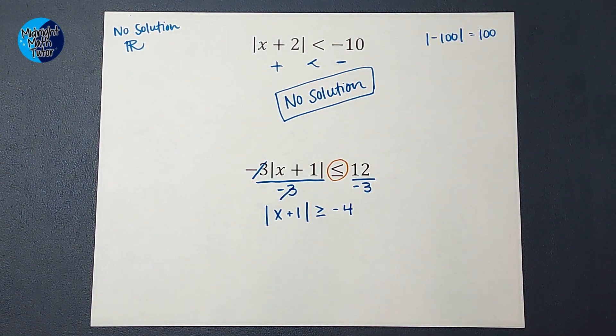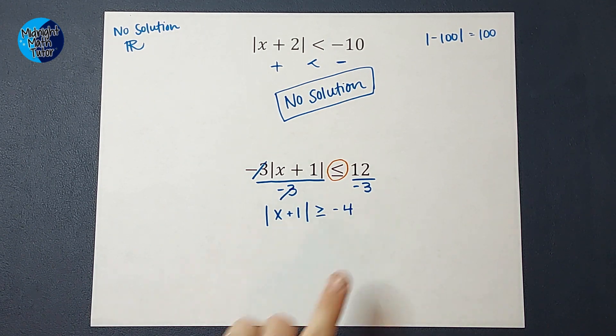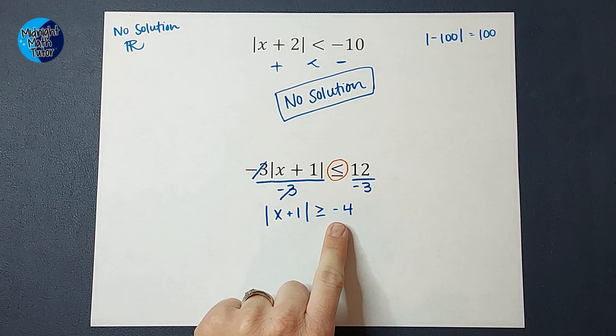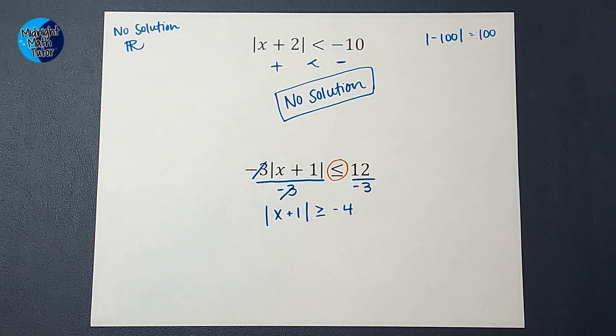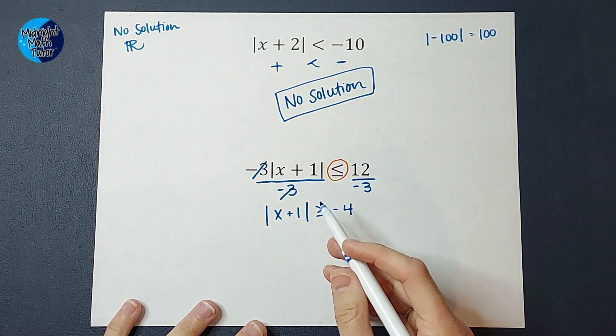My absolute value bars are alone and I should have alarm bells going off again because my absolute value bars are alone and I've got a negative over here. So that's when I'm automatically like, okay, this is either going to be all real numbers or no solution. Again, we're going to think about it logically.